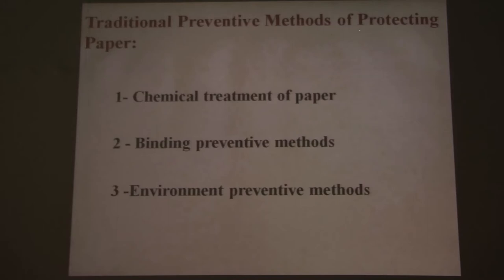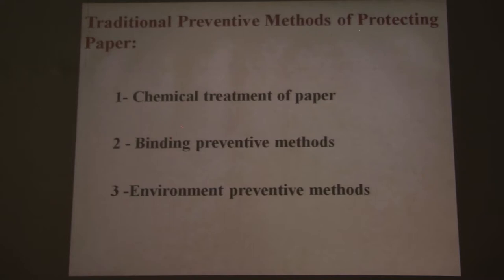For traditional preventive methods of protecting paper, I divided them into three categories. The first is chemical treatment of paper itself, where you directly use some materials in contact with paper. The second is using some methods during the bookbinding process itself — I call it binding preventive methods. The third is environmental preventive methods, which is mainly about creating a free environment from insects or anything that could harm paper in the museum or archive.